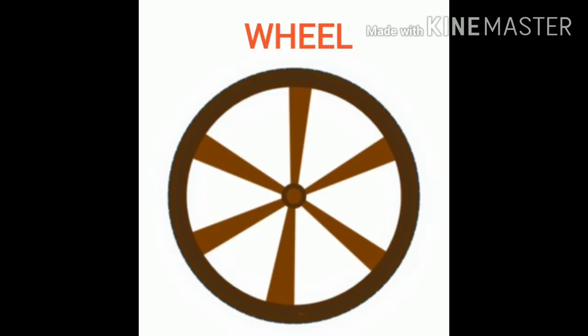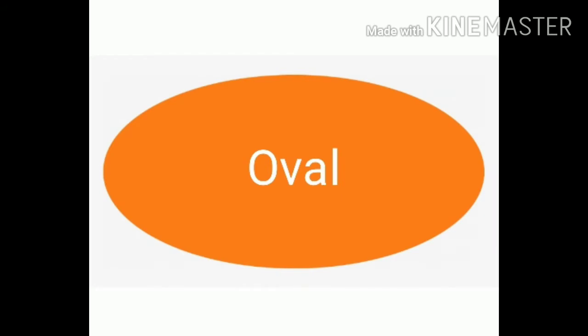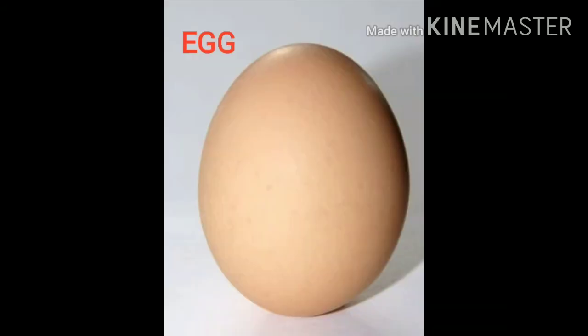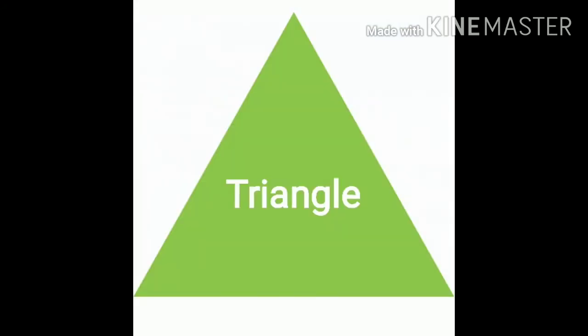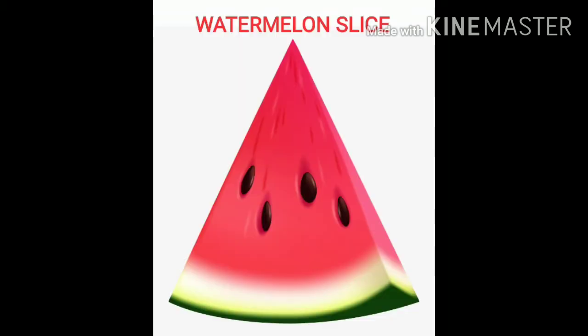Oval. Oval shape object is egg. Triangle. Triangle shape object is watermelon slice.